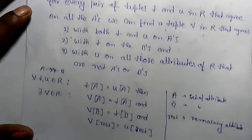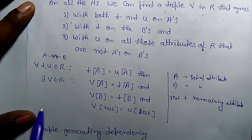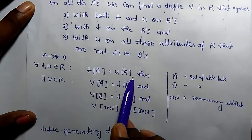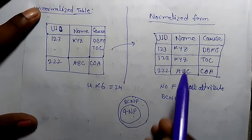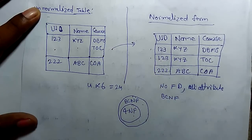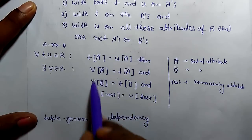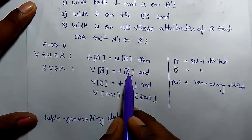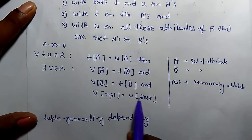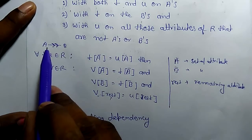In simplified form: if there are two tuples T and U where T of A equals U of A, then there exists some V which holds these conditions — V of A equals T of A, V of B equals T of B, and the rest of the attributes of V equal the rest of the attributes of U. If this condition holds, it means A multivalued-determines B. This is also called a tuple generation dependency.